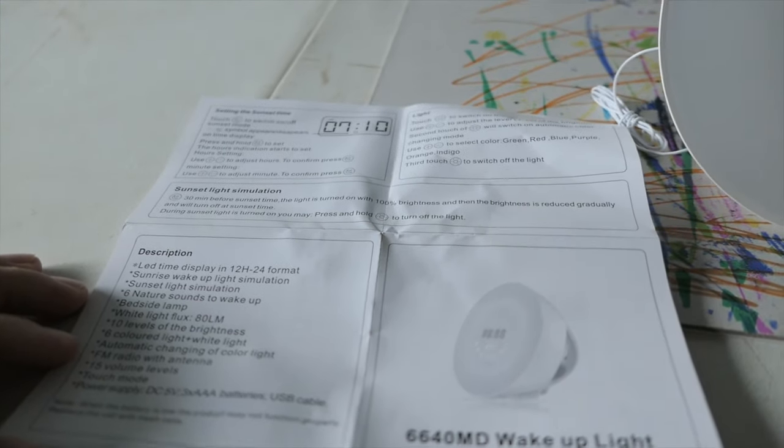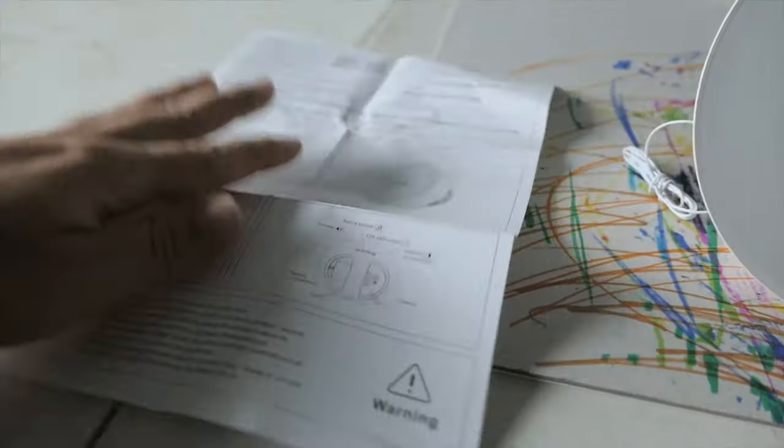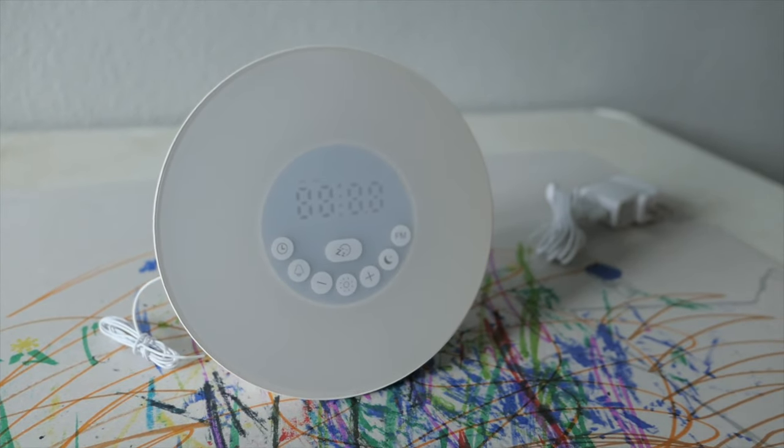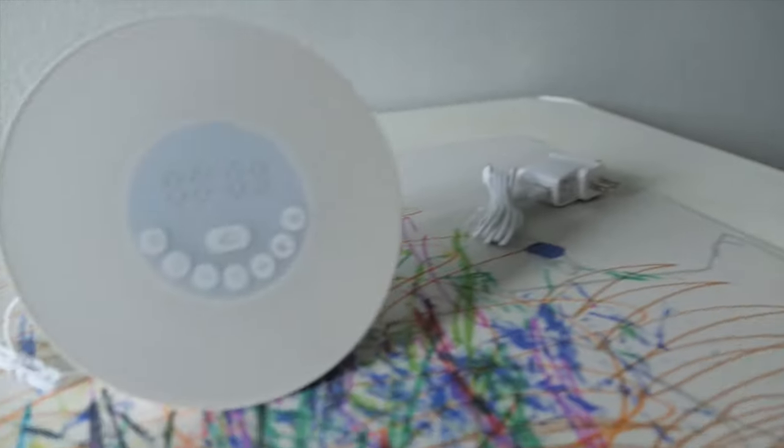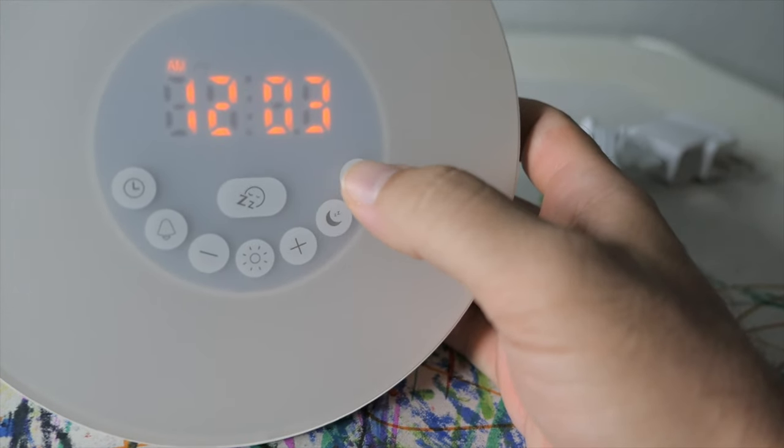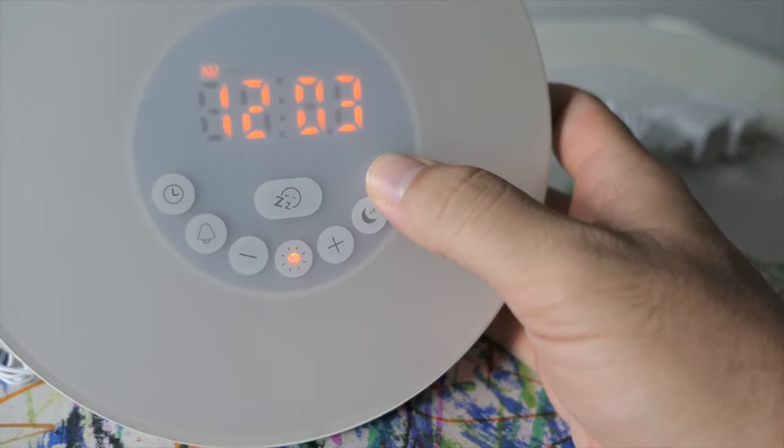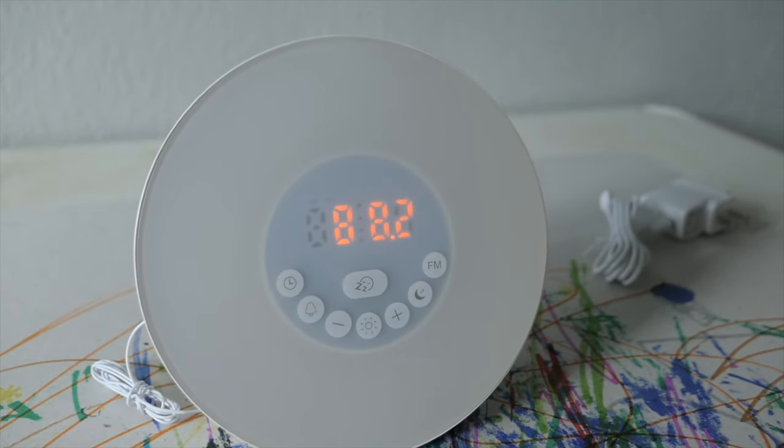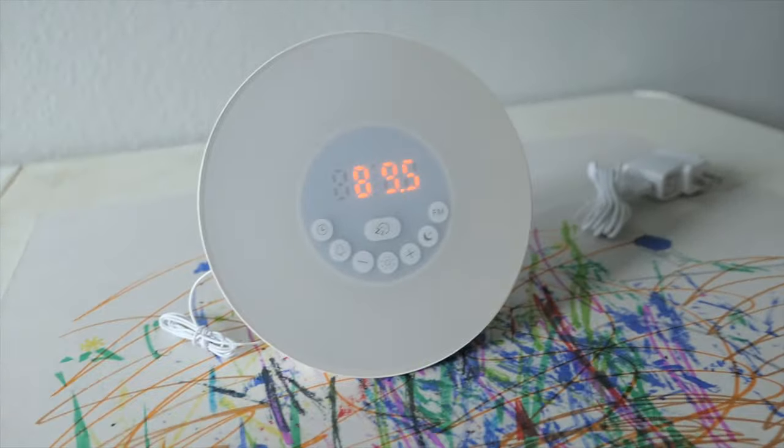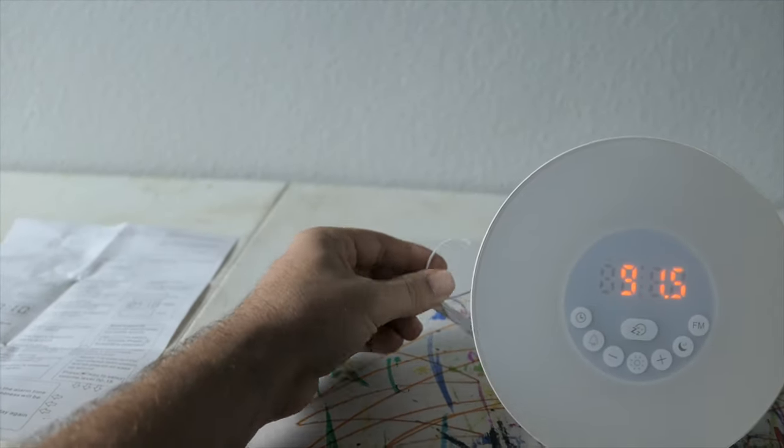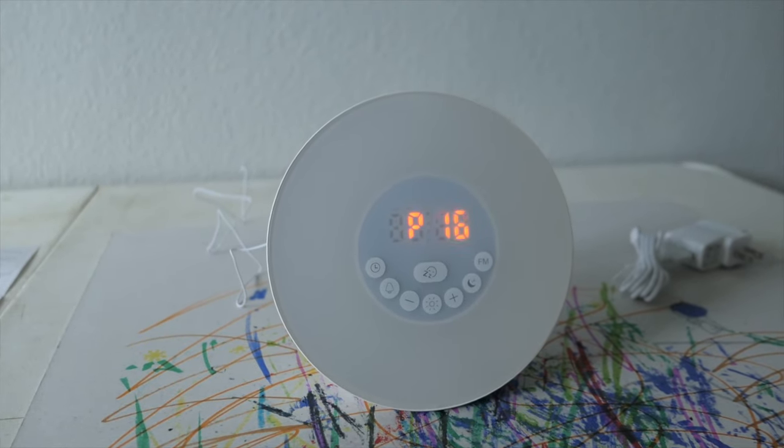It looks like a pretty good manual here, kind of explains everything in a very easy form. All right Marcus, so in order to get the radio to work, it says in the manual to hold this FM button and then it'll auto scan. There it goes. It's going to find all the channels and add them to the list.